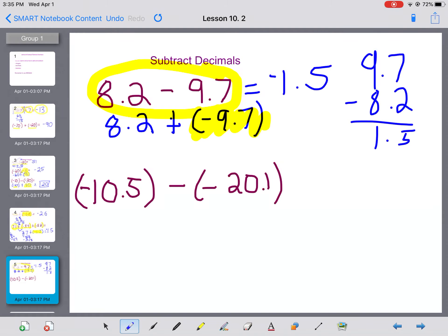All right. Negative 10.5 subtract negative 20.1. So let's do leave, switch, switch again. Write out what you have, switch, and then switch. So again, I'm adding a negative and a positive. So I can find the difference between those two numbers.